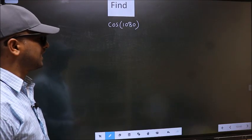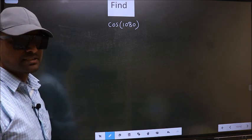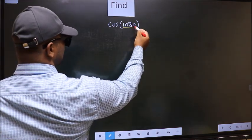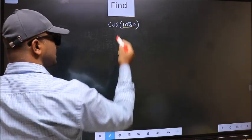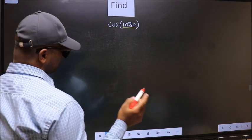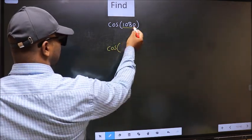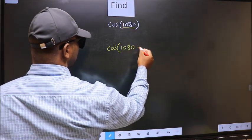Find cos 1080. To find this, we should follow this method. See, here we have 1080 and 1080 is a multiple of 180. So what we should do is cos, in place of this we should write 1080 plus 0.